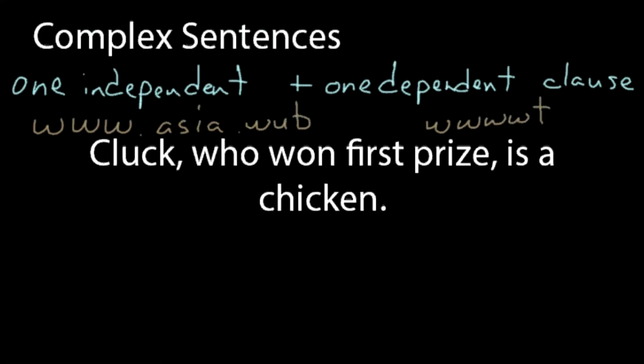Cluck, who won first prize, is a chicken. 'Who won first prize' is an adjectival clause, a clause working like an adjective, because it gives us more information about the noun Cluck.